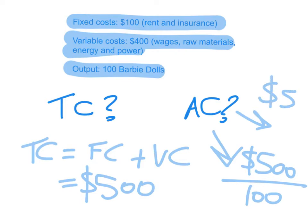This means that each Barbie doll costs this firm an average of $5. Now if the firm wants to make a profit, it would set a price and sell each Barbie doll for higher than $5, and that would be how it makes a profit.